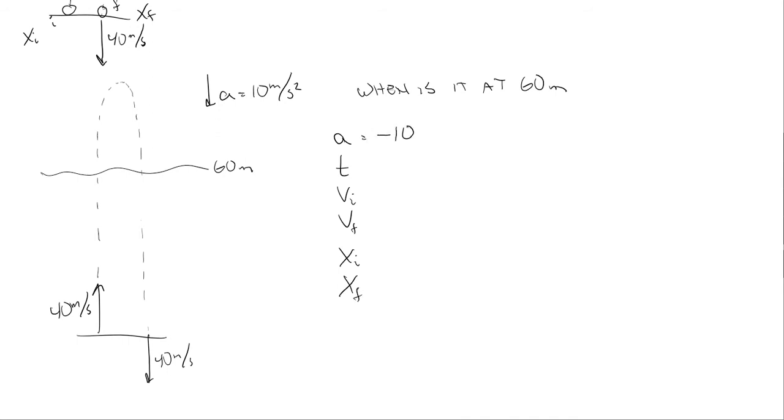So I'm going to set up my ATVX table. And a is going to be negative 10 meters per second squared. Again, we use 9.8 when we calculate in class, but from a number standpoint, it's just a little easier conceptually to think of 10. We don't know what time that's going to occur at. We do know we're starting at 40 meters per second upward. We don't know how fast it's going to be.